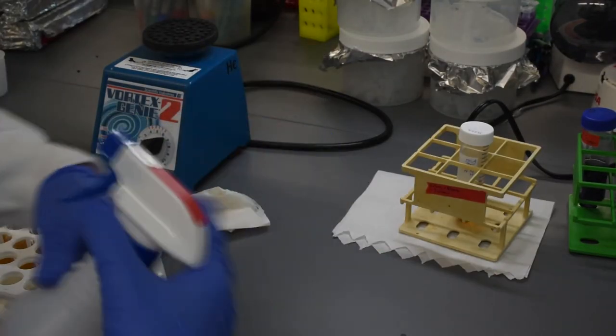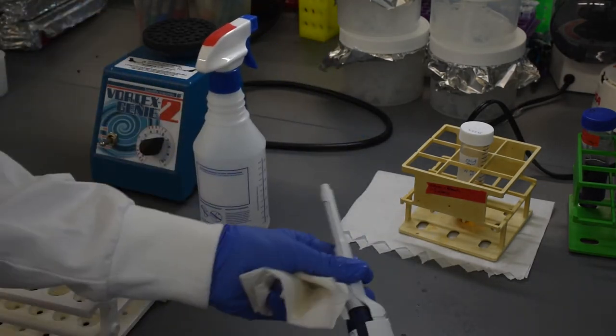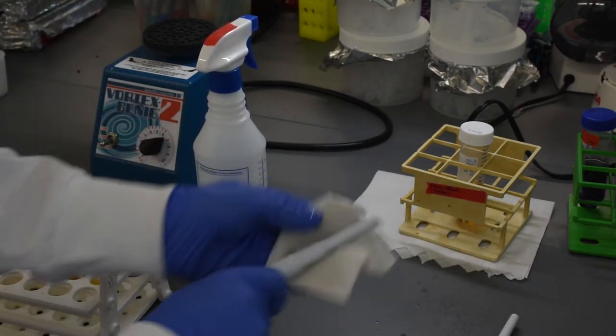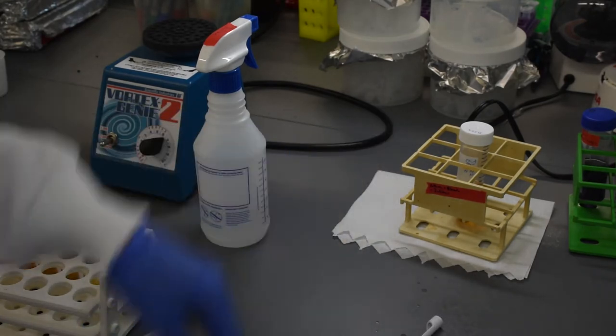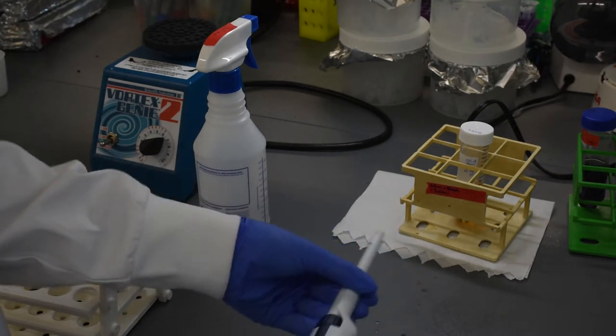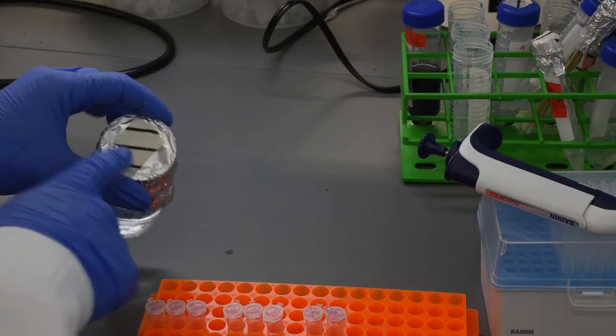Clean off your 1000 microliter pipette with ethanol or bleach before proceeding. Add one milliliter of sterile water to each cell pellet.